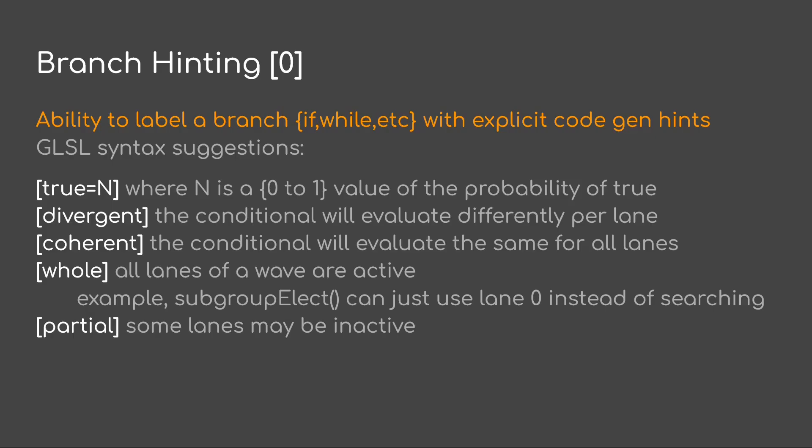Next: branch hinting. I'd like the ability to label a branch with explicit codegen hints. First, true_equals and then some number — a floating point number from 0 to 1. This would be the probability of a true in the comparison or in the if, and so on.